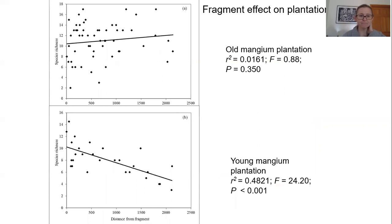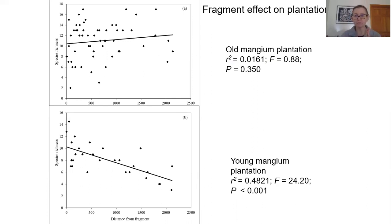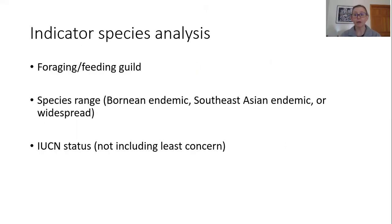Young plantation far from any kind of fragment had the lowest values, with native forest again having the highest species richness. Focusing just on the plantation, for old plantation the species richness does not significantly vary with distance from the edge of a fragment. But for young plantation, there was a steep decline in species richness from the edge of the fragment.